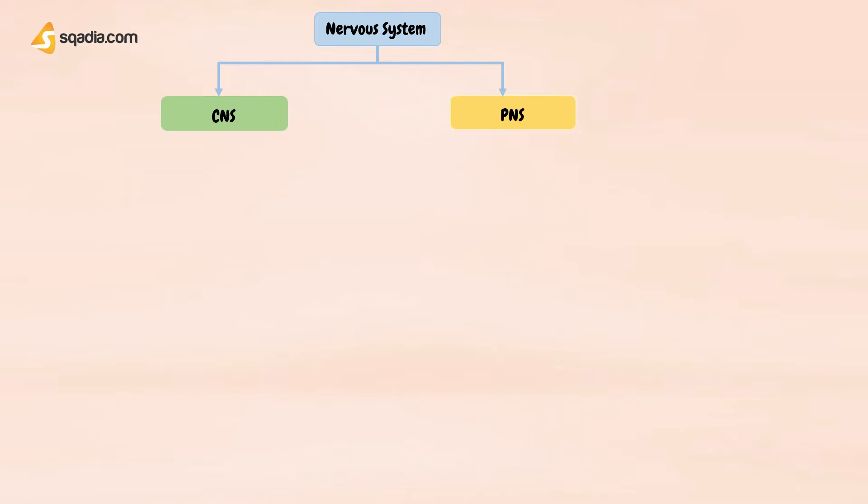The peripheral nervous system includes the cranial and spinal nerves and can be subdivided into the somatic nervous system and autonomic nervous system.